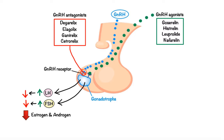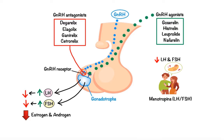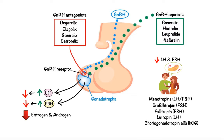Deficiency of both LH and FSH as a result of hypothalamic or pituitary disease can cause infertility or subfertility in both men and women. To address this, pharmaceutical preparations of LH and FSH have been developed to stimulate spermatogenesis in men and to induce follicle development and ovulation in women. These include menotropins, a purified mixture of LH and FSH; urofollitropin, a purified form of human FSH; follitropin, a recombinant human FSH; lutropin, a recombinant human LH; and choriogonadotropin alfa, a recombinant form of human chorionic gonadotropin that shares structural similarities with LH and activates the same receptor.